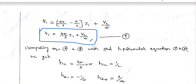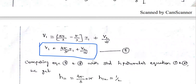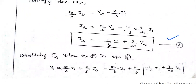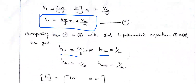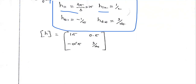Substituting the i2 expression back into the v1 equation to eliminate i2 gives v1 = 15·i1 + (1/2)·v2. Comparing with the standard form: h11 = 15 Ω, h12 = 0.5, h21 = −0.5, h22 = 3/20 S. The H-parameter matrix is [15, 0.5; −0.5, 3/20].